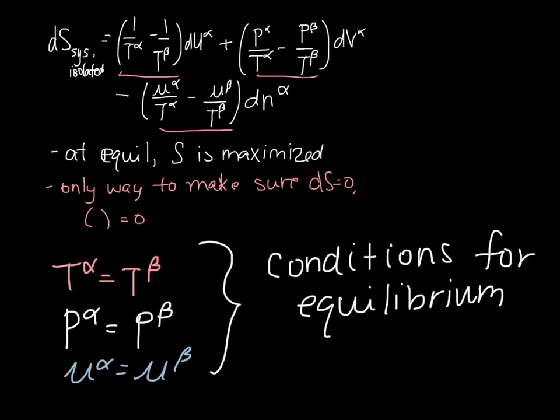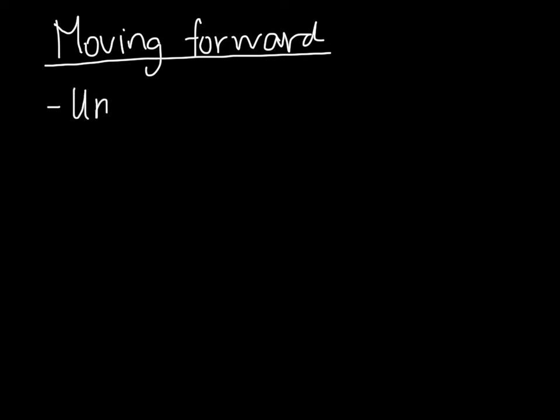Let's just briefly look at conditions for equilibrium as we move forward. Because, most of the rest of the semester, we'll build on this idea so that we can start to understand or predict equilibrium. So, we'll start by looking at unary systems. And, we'll want to know what are the conditions for two phases to coexist. And, in this case, we want to know what are the pressure and temperatures where two phases can coexist.